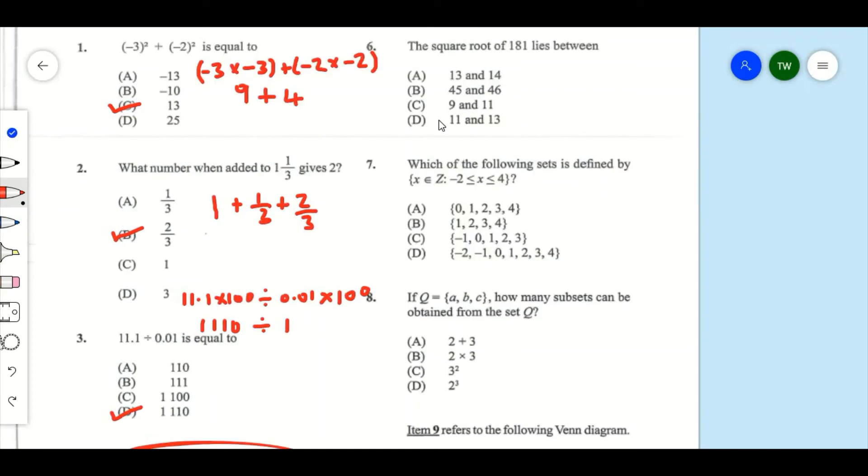Number 6: The square root of 81 lies between... The square root of 81, that's going to give us... of course A is the answer here.